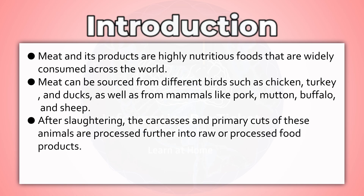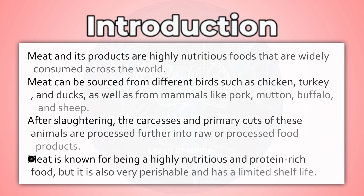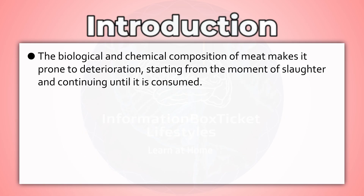After slaughtering, the carcasses and primary cuts of these animals are processed further into raw or processed food products. Meat is known for being a highly nutritious and protein-rich food, but it is also very perishable and has a limited shelf life. The biological and chemical composition of meat makes it prone to deterioration, starting from the moment of slaughter and continuing until it is consumed.